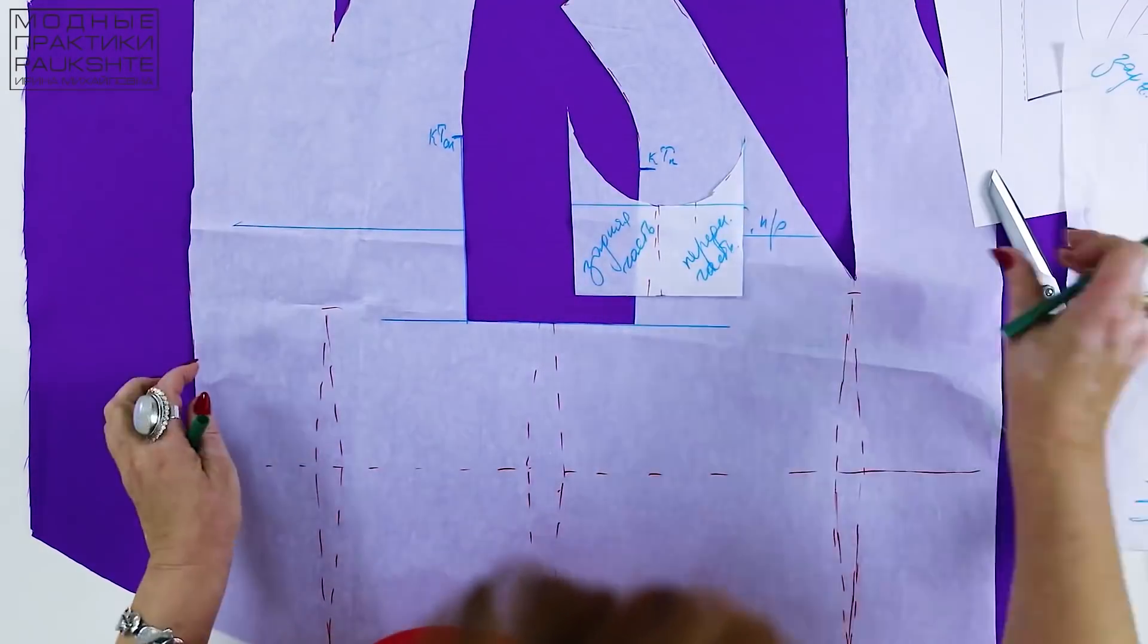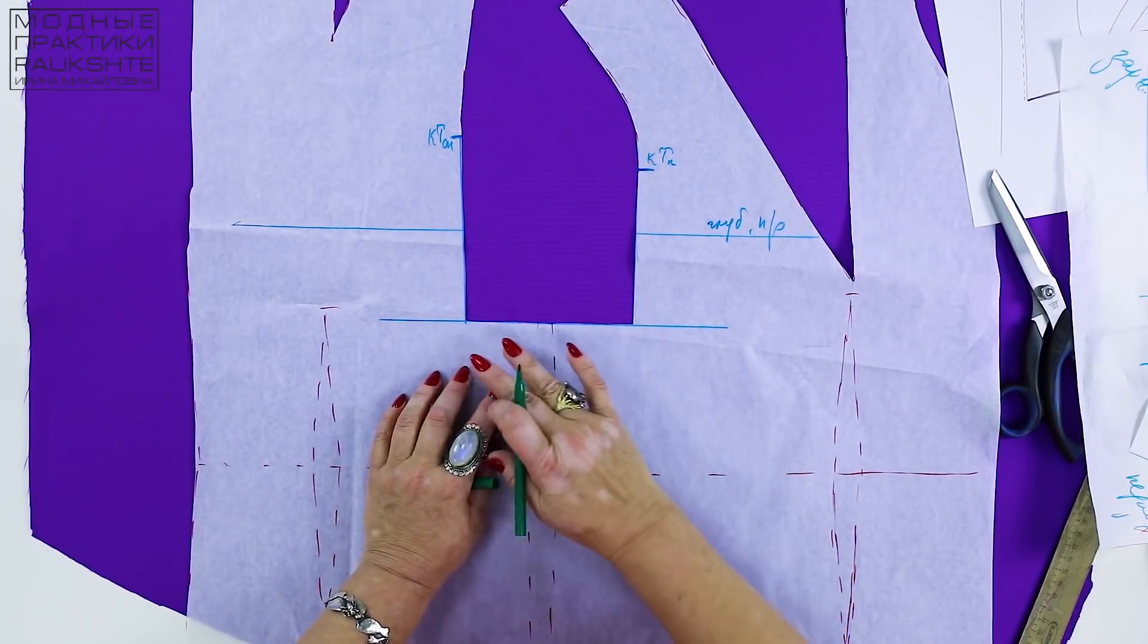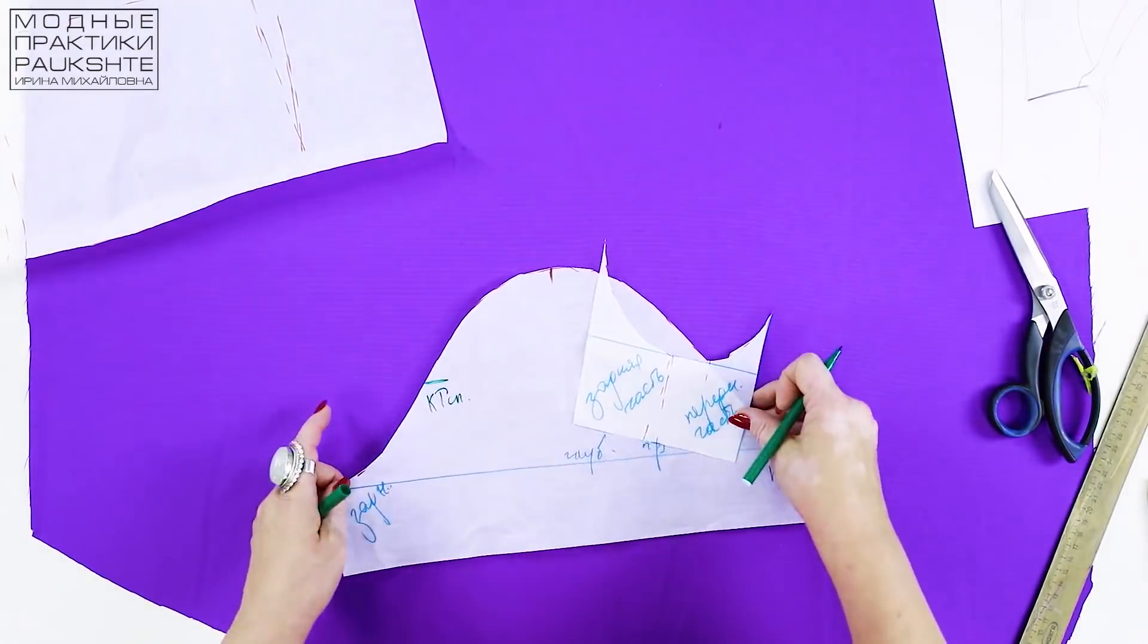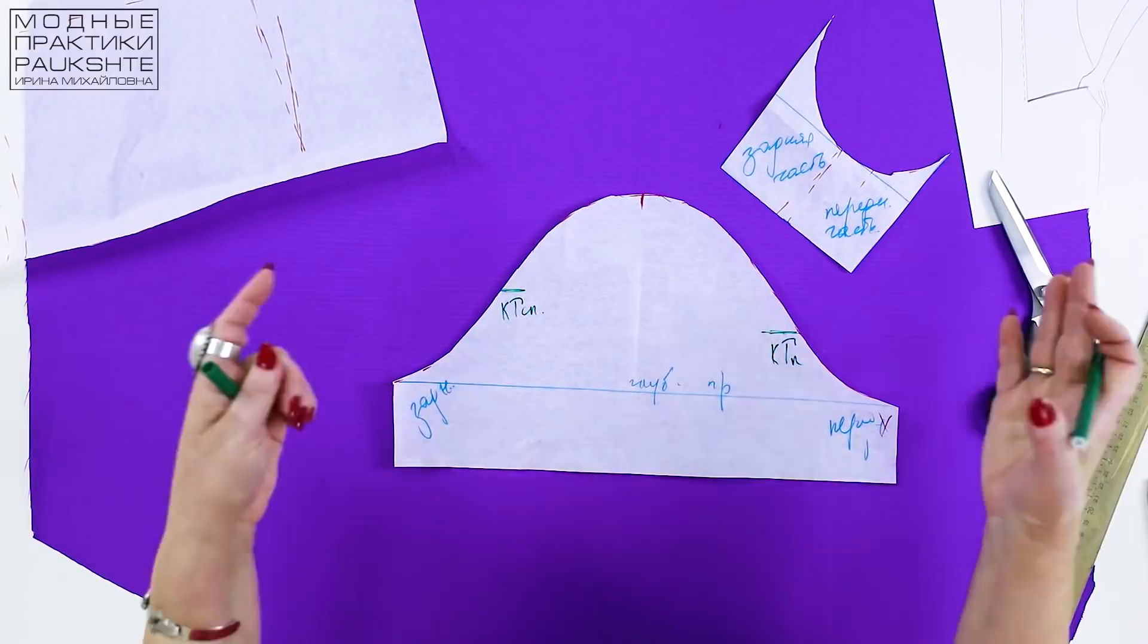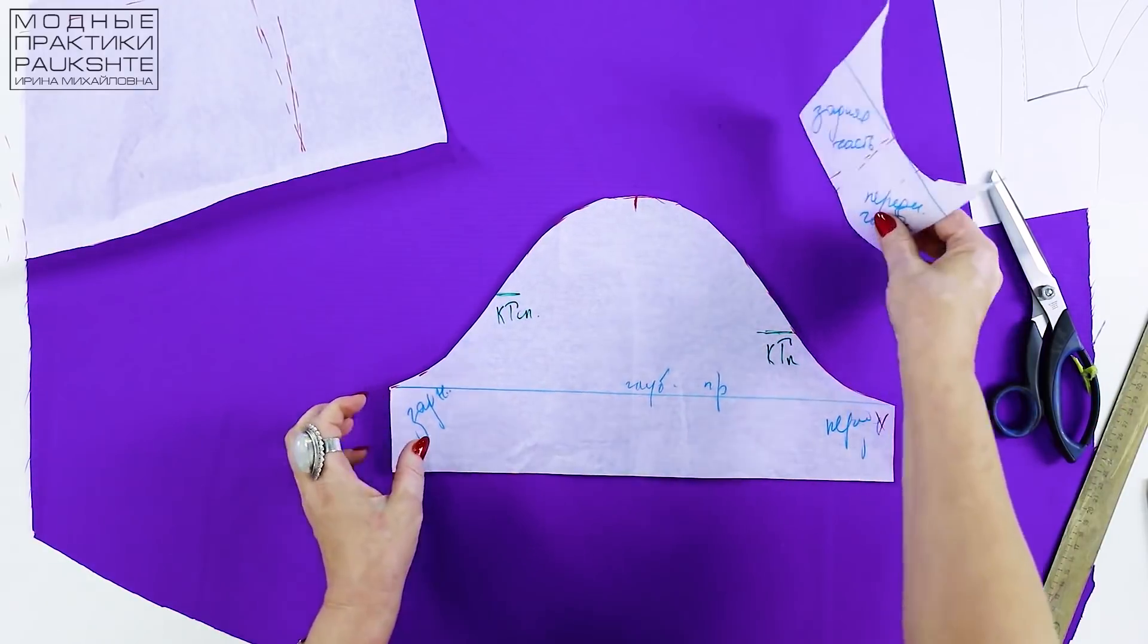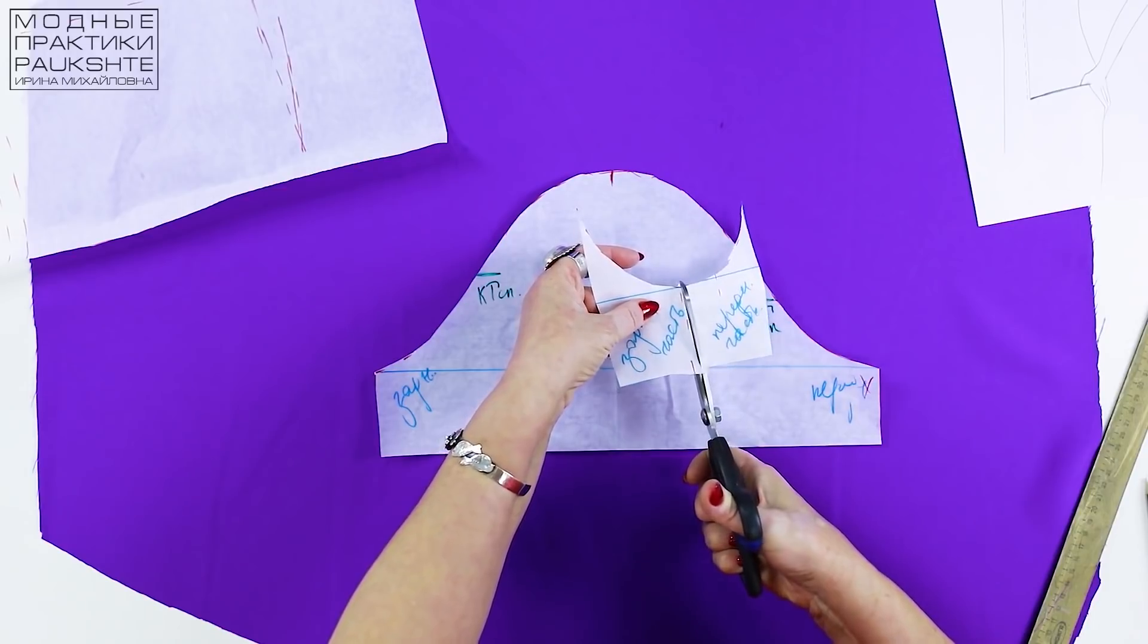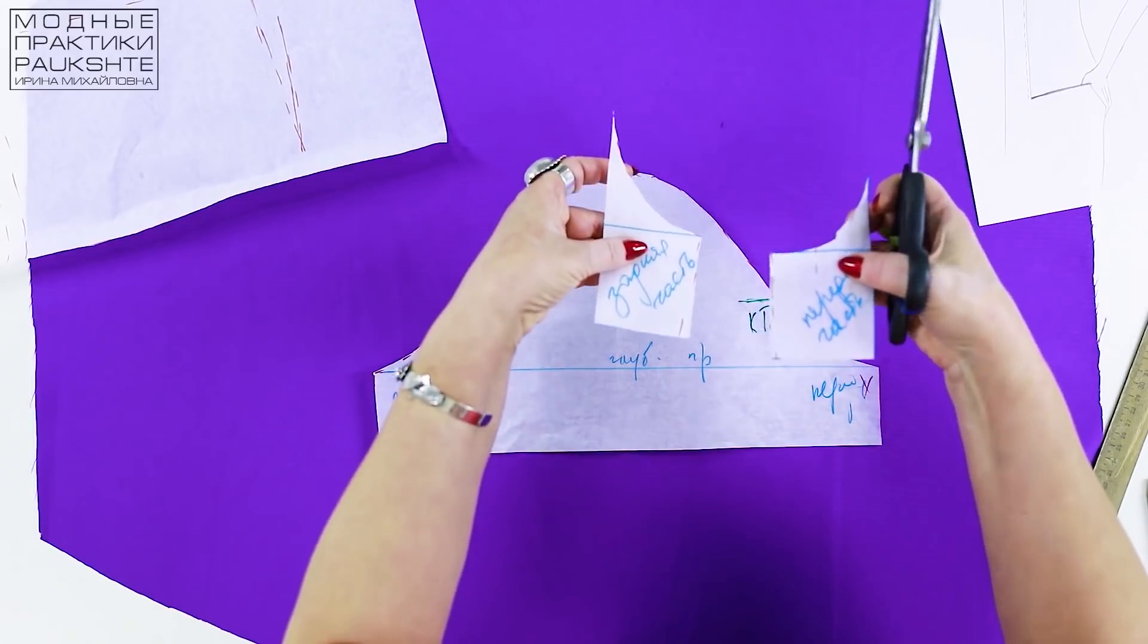I put the sleeve aside for now. Have a look at the armhole once again. I put this pattern aside too. Let's move on to the sleeve. I've put this piece of fabric here for you to see everything clearly. Both the tracing paper and the table are white. I hope you like the design. I cut this piece in two along the side seam. You can see that the front and the back parts are separate now.